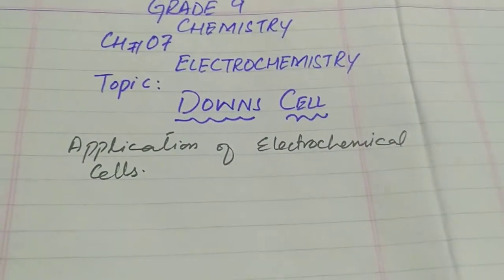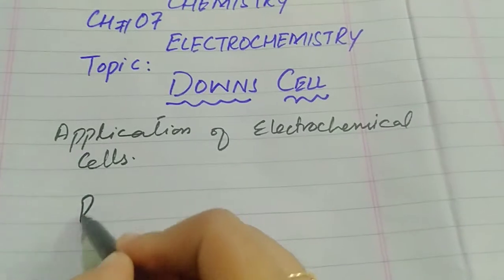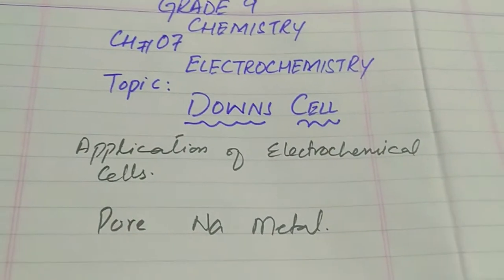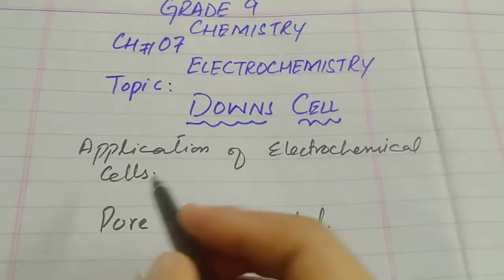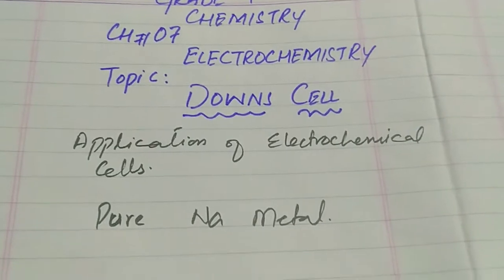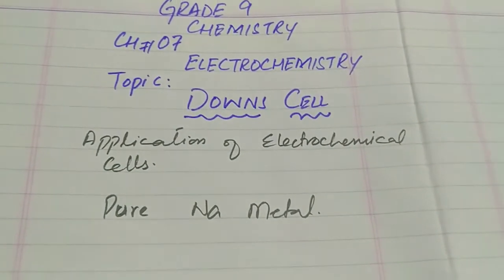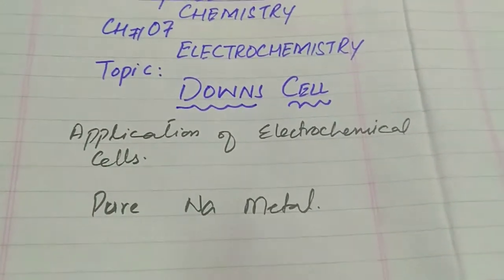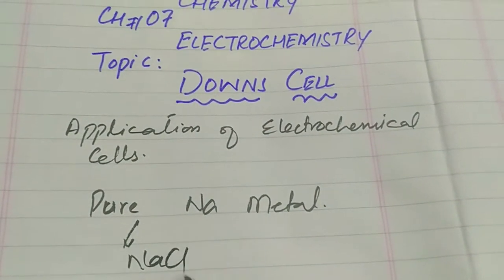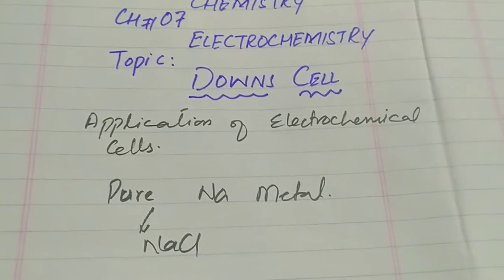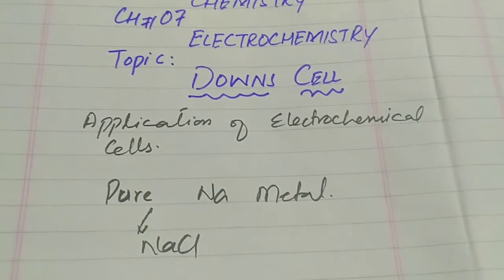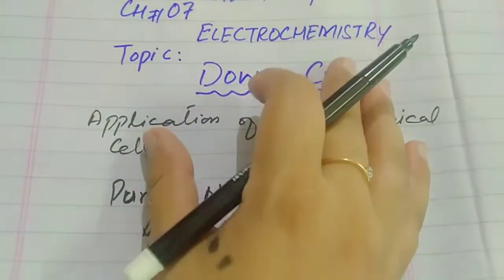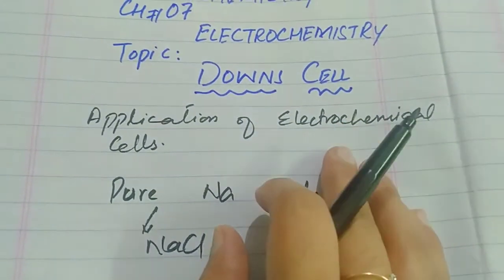The Down Cell is a cell in which we get pure sodium metal. It is a cell in which we can obtain pure sodium metal by using very cheap material. The cheapest material is NaCl. From the molten state of NaCl we will separate sodium metal to get pure sodium metal, and this process takes place inside the Down Cell, which is an application of the electrochemical cell.